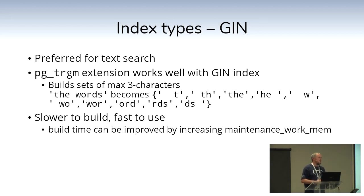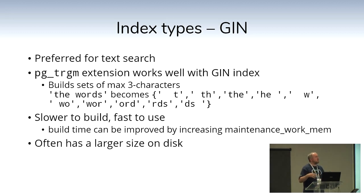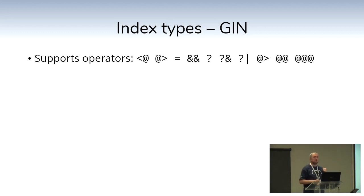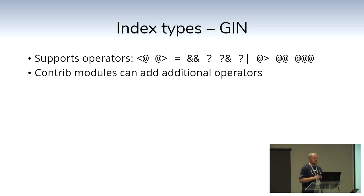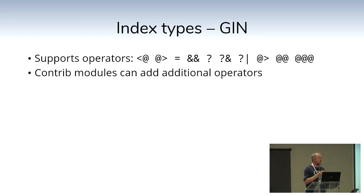GIN indexes are generally a little slower to build because they're indexing more, but very fast to use. They also take up a bit more space since they store each individual possible value. GIN indexes support operators including: less-than-at (contained by), contains, equals, and double-ampersand (overlaps). Certain contrib modules or extensions like trigram can add operators; certain data types also have varying operators. The trigram extension adds extra operators including the percent sign variants.